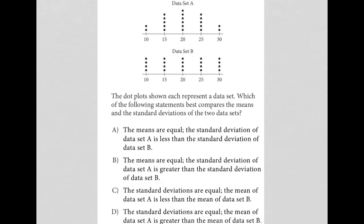So this question is a diagram question. Any question that provides some visual input, I'm going to call a diagram question. The question says the dot plots shown each represent a data set. Which of the following statements best compares the means and the standard deviations of the two data sets?